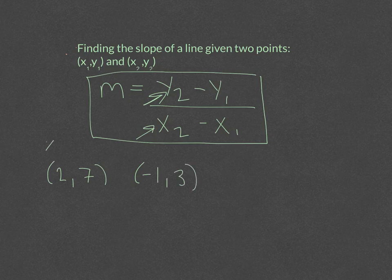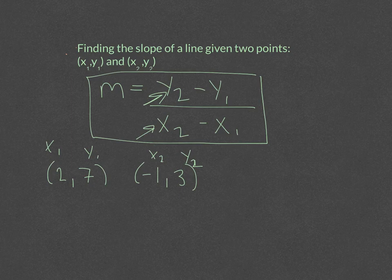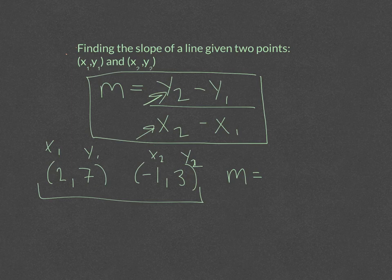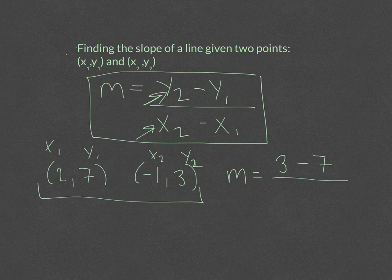So I'm just going to have this be x1, and this one y1, this one x2, and this one y2. So we're just going to start with our points and plug them into the formula. So our slope is equal to y2 minus y1, over x2, which is negative 1, minus x1, which is 2.